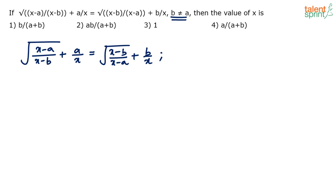Looking at the responses, options one and four do not have the symmetry that the question has. The question has symmetry: (x-a)/(x-b) on one side, (x-b)/(x-a) on the other, then a/x and b/x. Option one has only b in the numerator with a+b in the denominator — that breaks symmetry. Option four has only a in the numerator. So options one and four are eliminated; it should be option two or three.